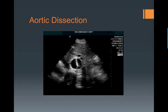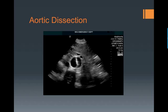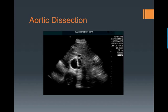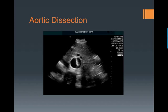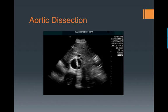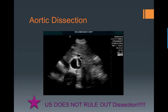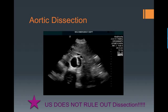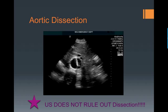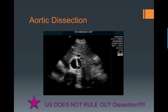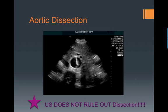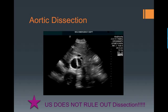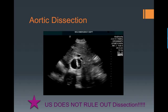This is an example of an aortic dissection. You can see the flap there in the center of the aorta. It's really important to understand that ultrasound does not rule out dissection. However, if you see this on the ultrasound image, you should be aware of what it is.